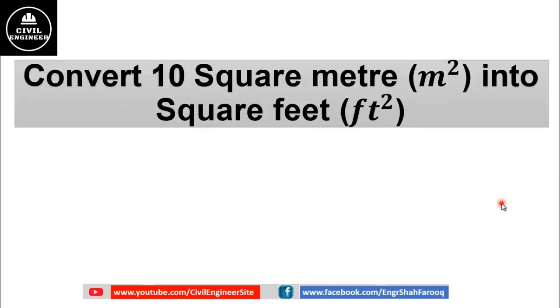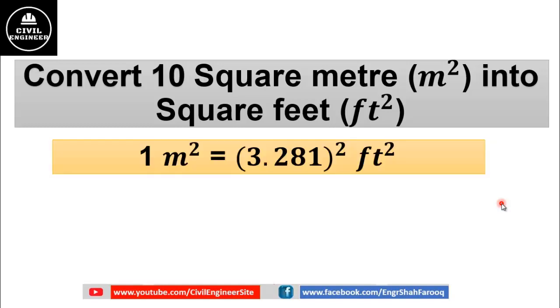Now to properly learn conversion of meter square into feet square, we will do a simple problem: convert 10 square meter into square feet. As we have discussed in the previous slide, one square meter is equal to (3.281)² square feet.